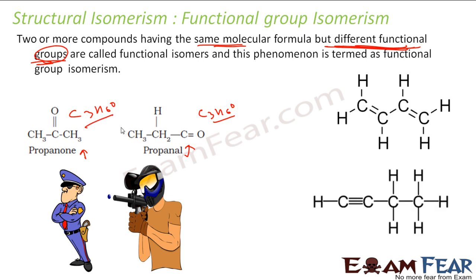One more example: here we have a compound with double bonds and another with triple bonds, but the number of carbon and hydrogen atoms is the same in both compounds.